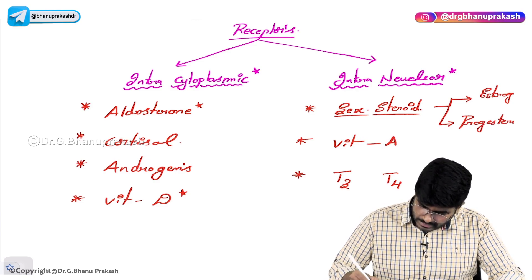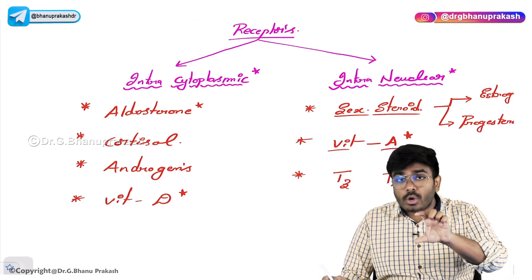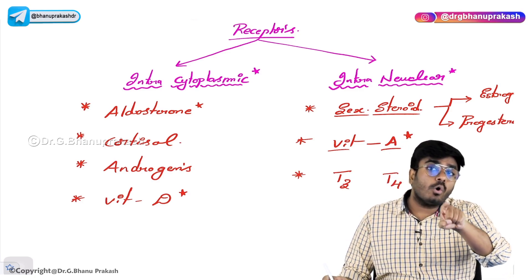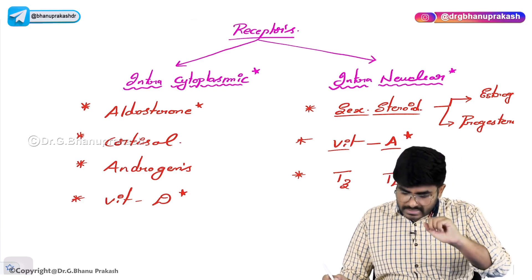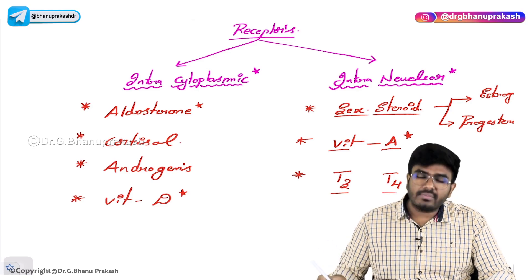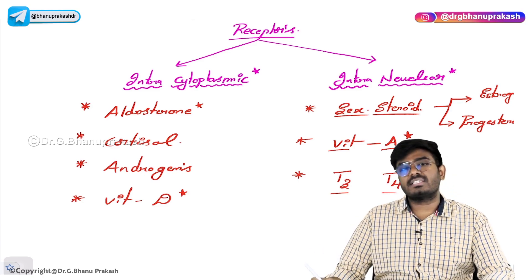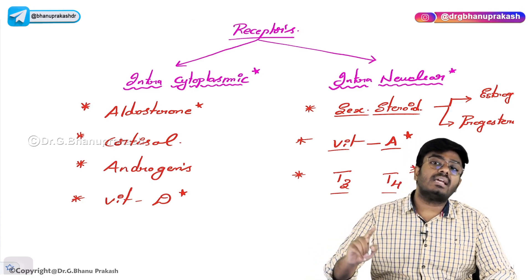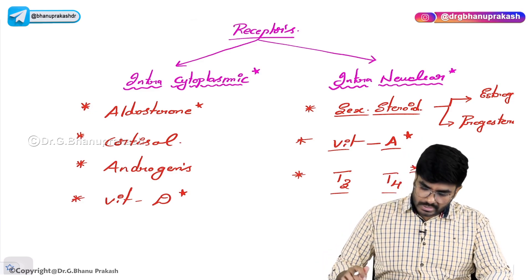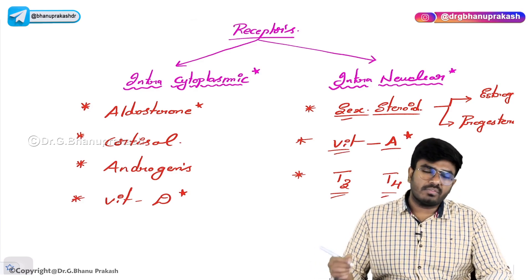Vitamin A and vitamin D are fat-soluble vitamins. They will cross the lipid layer, enter into the cytoplasm, and from the cytoplasm they can even go into the nucleus. Inside the nucleus, there is a receptor for vitamin A, and also for T3 and T4 — thyroid hormones. Remember, thyroid hormone receptors are present inside the nucleus, so thyroid hormones have intranuclear receptors. This is a very important MCQ point.